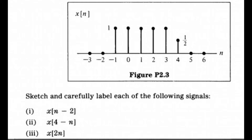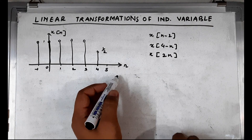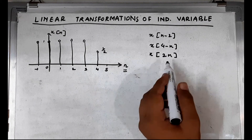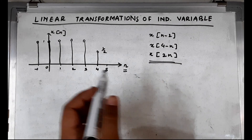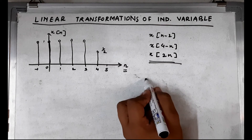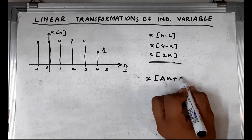Now let us solve the question displayed on screen. The plot shown is a discrete time signal in which the time variable is discretized to n. We are asked to find several functions given x of n, applying the same principle of scaling factor a and translation factor b for x of an plus b.